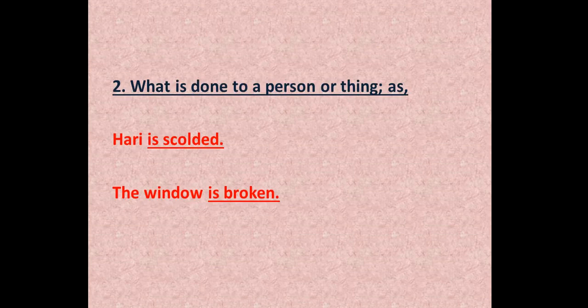A verb also tells us what is done to a person or thing. For example, Harry is scalded. The window is broken. Here the subject is Harry and the window, and what had happened to them — Harry is scalded and the window is broken. So 'is scalded' and 'is broken' are verbs.